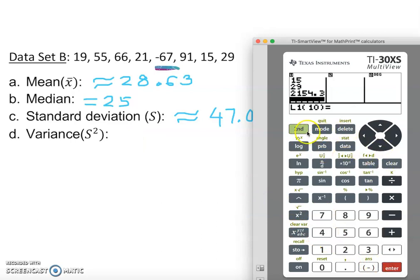Then definitely for the variance we're going to square it. 47 squared, enter. Oops, sorry, you see you have to clear it. So we're going to go second zero, number two, and everything is gone. Now you can do 47 squared, enter.